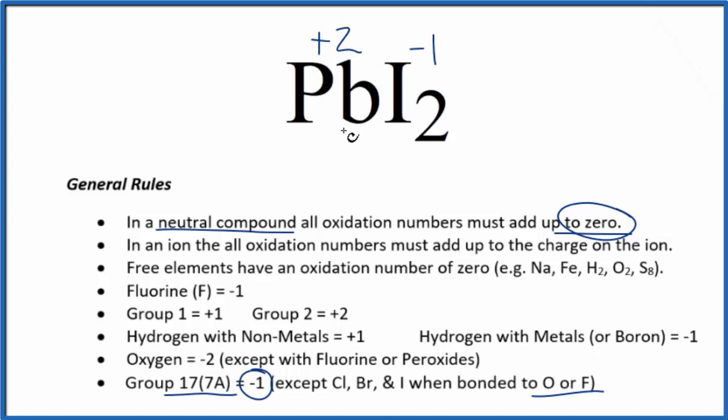So the oxidation number for the lead in lead iodide is plus two. This is Dr. B with the oxidation numbers for PbI2. Thanks for watching.